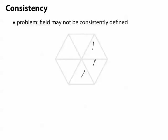then when we get back to the beginning, there's no reason why the vector we end up with should be the same as the one we started out with. We don't really have a consistent idea of what the vector field should look like at this point.